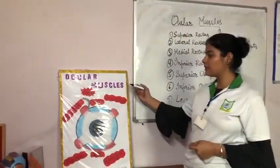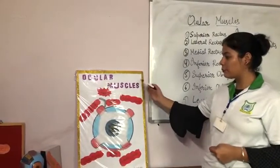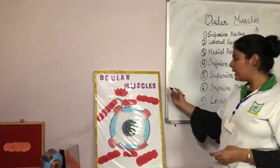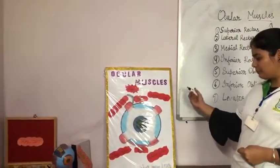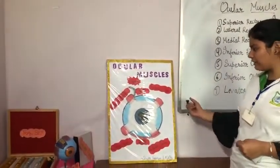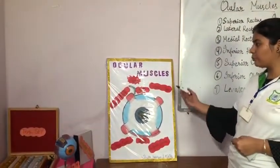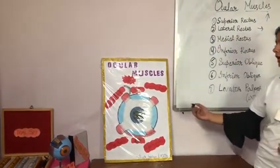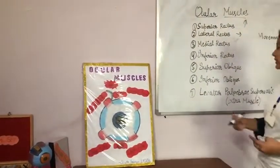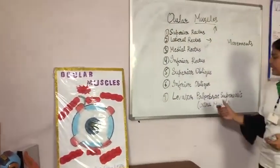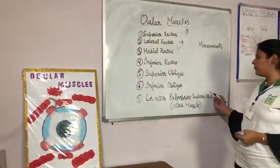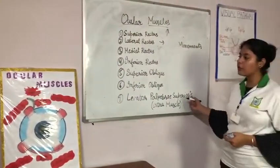We have 6 ocular muscles: superior rectus, lateral rectus, medial rectus, inferior rectus, superior oblique, and inferior oblique. We have one extra muscle also, that is levator palpebrae superioris.